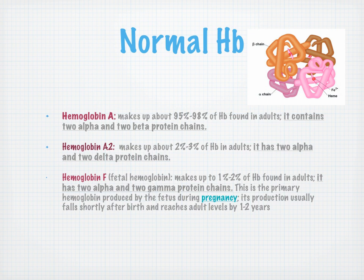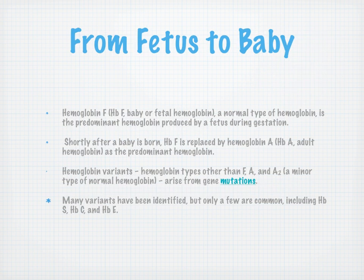Hemoglobin A2 makes up 2 to 3% of hemoglobin in adults and has two alphas and two deltas. Fetal hemoglobin, or hemoglobin F, makes up 1 to 2% in adults and has two alphas and two gammas. Fetal hemoglobin is the primary hemoglobin produced during pregnancy, and its production falls off after birth, reaching adult levels by 1 to 2 years. Shortly after birth, hemoglobin F is replaced by hemoglobin A. F, A, and A2 are our typical types, but mutations or variants can occur.